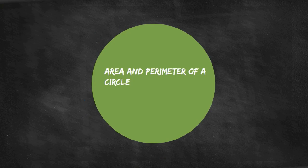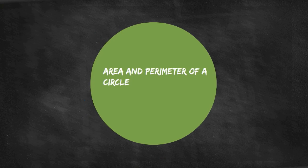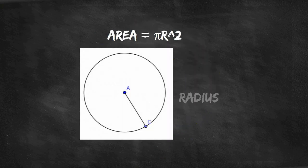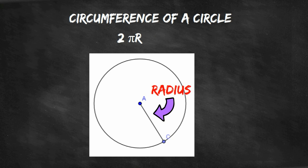Let's start with a circle. The area of a circle is equal to pi radius squared. The perimeter of a circle, which is called the circumference, is equal to 2 pi r or radius.